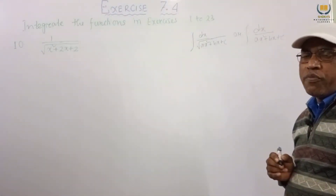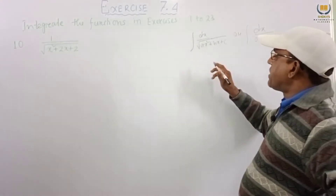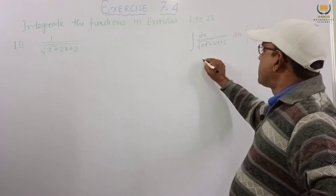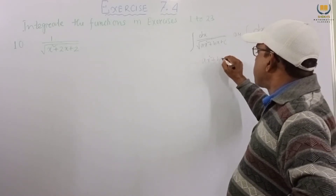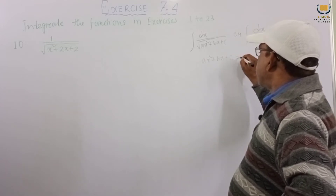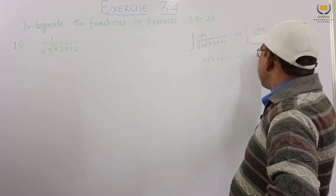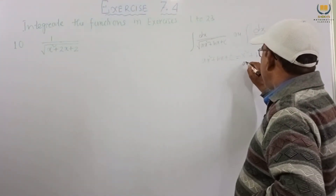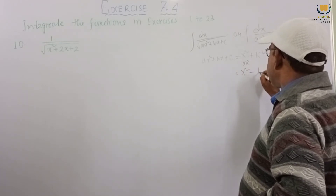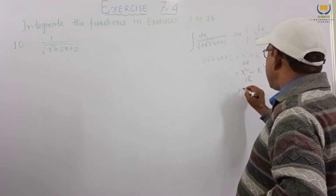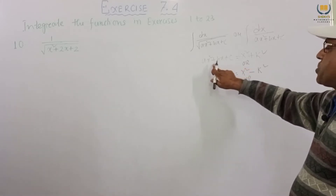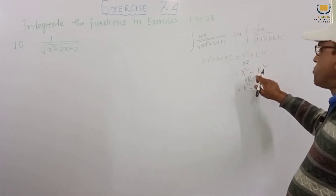If we get this type of integrals, then for solving these integrals, this is the quadratic — either root over or without root — then we consider ax square plus bx plus c and express it as x square plus k square, or x square minus k square, or k square minus x square. So we express this quadratic expression in either of these forms.